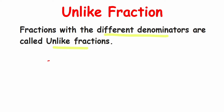Let me take an example to understand. Suppose I have 7/8, then 5/12, and then 7/16. All three numbers have different denominators. Again, we are not looking at the numerators — we are looking at the denominators. Since they are different, these are called unlike fractions.